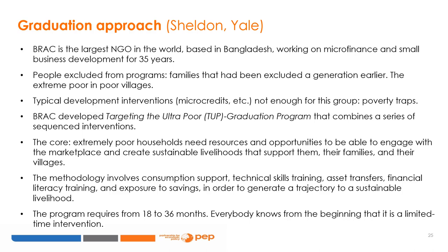BRAC observed that some individuals were regularly excluded from NGO programs — specifically, families excluded not in the current generation but one generation earlier, representing the extreme poor in already poor villages. The observation by BRAC practitioners was that traditional development interventions such as microcredit were not enough for this group since they were in poverty traps. For these people, BRAC developed the Targeting the Ultra Poor Graduation Program that combines a series of sequenced interventions.